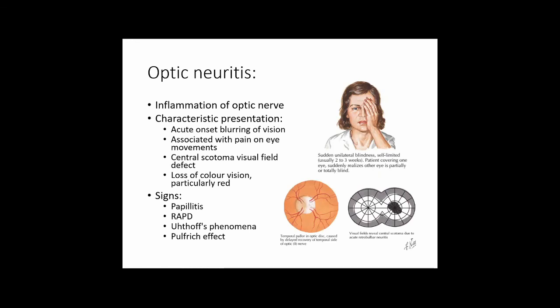A typical exam question: a 20–30 year old female presents with difficulty seeing through one eye, pain on eye movement, central scotoma on visual field assessment, and a relative afferent pupillary defect (RAPD). RAPD occurs because demyelination slows nerve conduction — when you swing a light from one eye to the other, the pupils will dilate before the slowed impulse reaches the CNS to cause constriction.